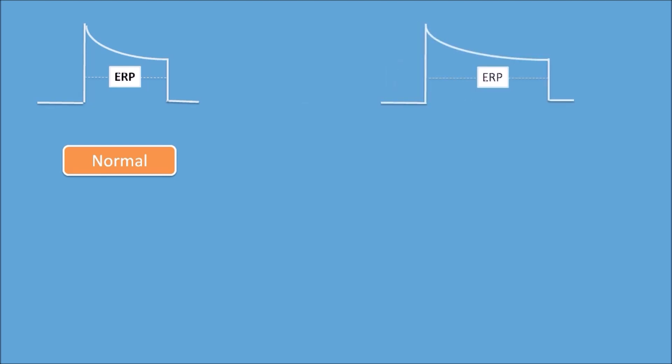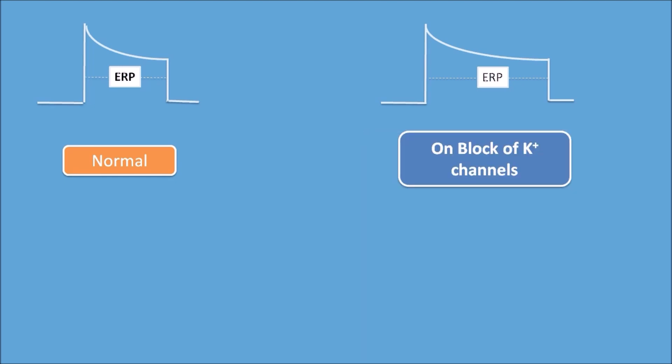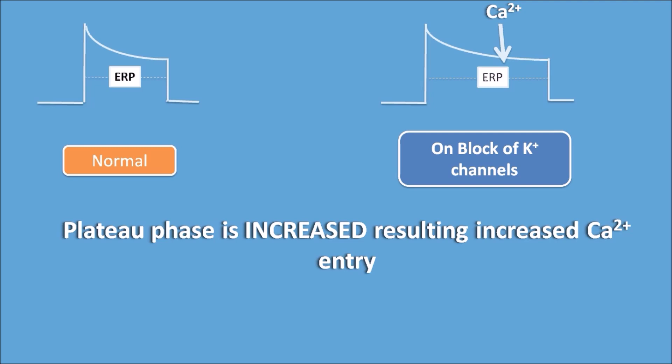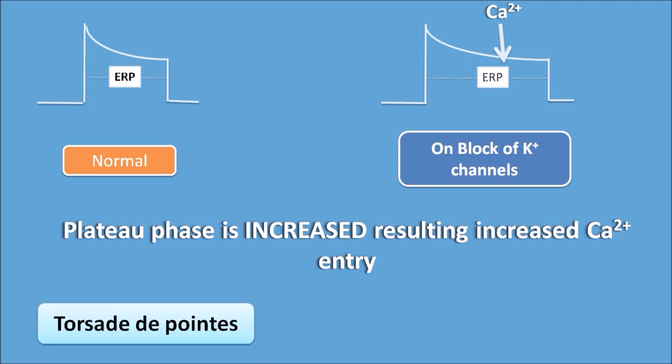Consider the normal action potential of the heart with a normal effective refractory period (ERP). When potassium channels are blocked, the ERP is increased because phase 3 is inhibited — phase 2, the plateau phase, is prolonged, resulting in an increased effective refractory period. As the plateau phase increases, more calcium enters the cardiac cells.